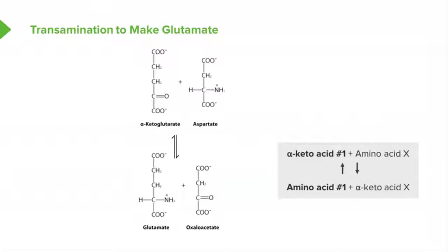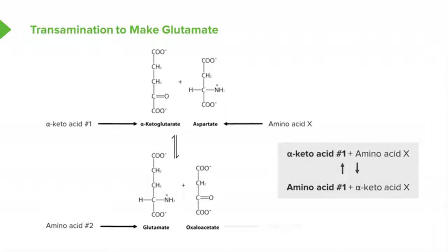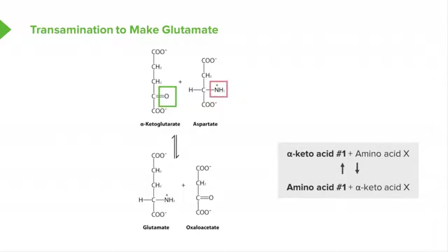This shows us structurally what was described previously. The alpha-keto acid number one is alpha-ketoglutarate. The amino acid number two is glutamate. The starting amino acid, or amino acid X, is aspartate, and the final alpha-keto acid X is oxaloacetate. We can see what's happening simply: the oxygen on alpha-ketoglutarate and the amine on aspartate are basically swapping. The oxygen goes from alpha-ketoglutarate to oxaloacetate, and the amine goes from aspartate to make glutamate.